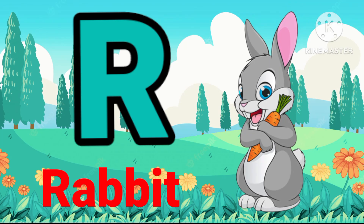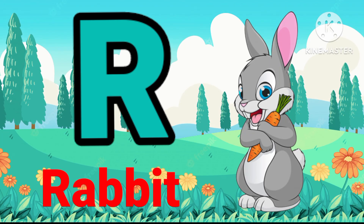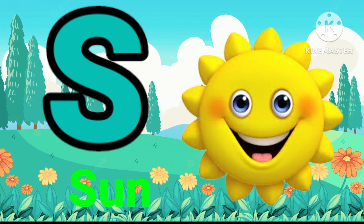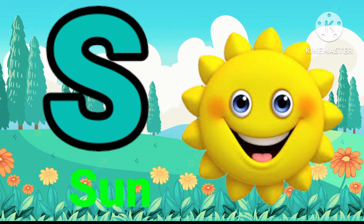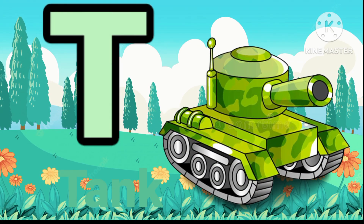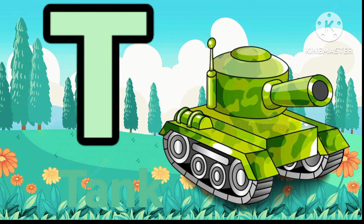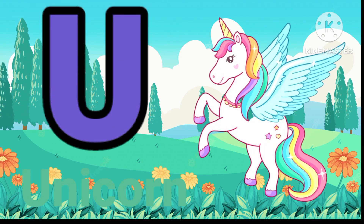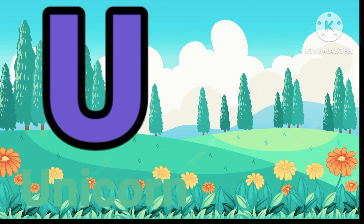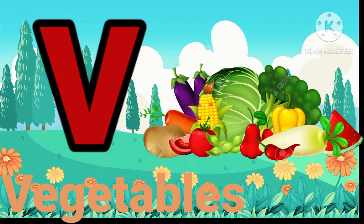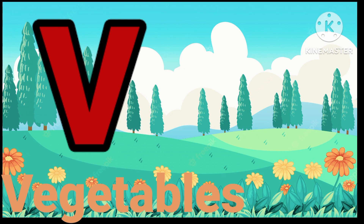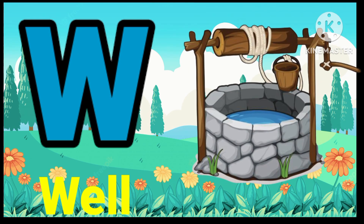R for rabbit, S for sun, T for tongue, U for unicorn, V for vegetable, W for well.